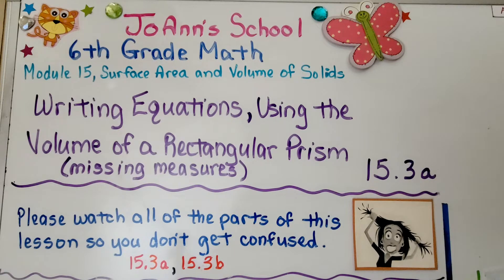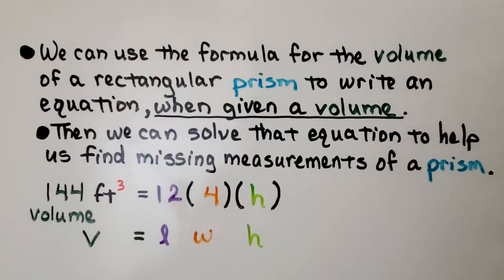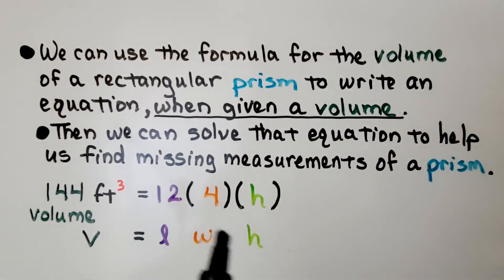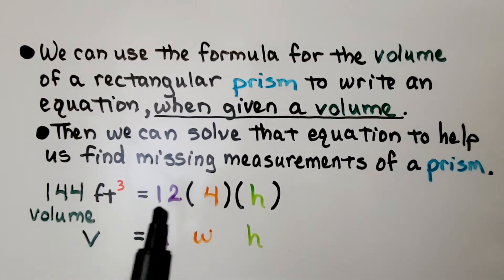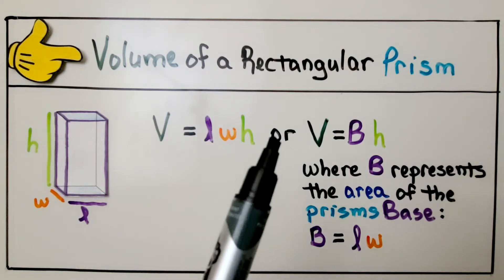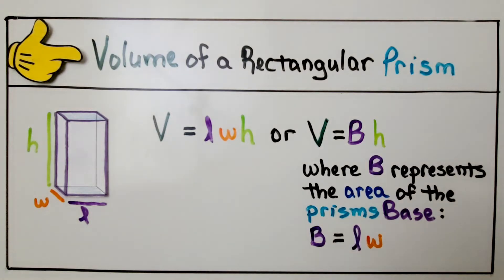Lesson 15.3a: Writing Equations Using the Volume of a Rectangular Prism. We're going to use the formula to help us find missing measures. We can use the formula for the volume of a rectangular prism to write an equation when given a volume. Then we can solve that equation to find missing measurements. We can use V = l × w × h, or V = Bh, where capital B represents the base area (length times width).